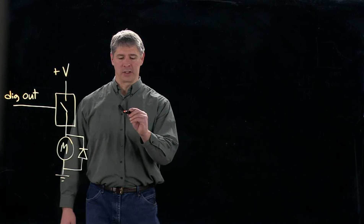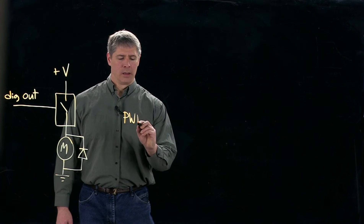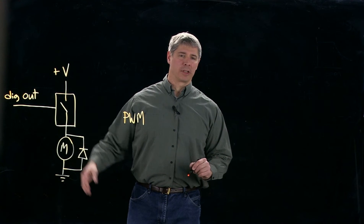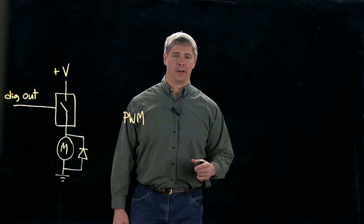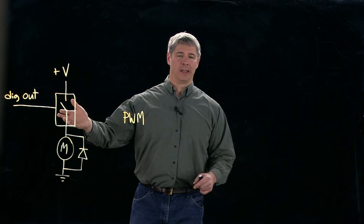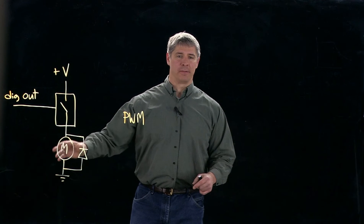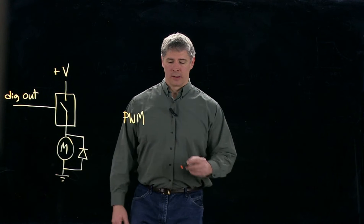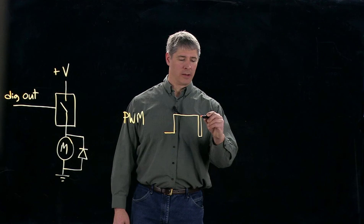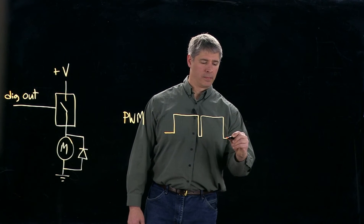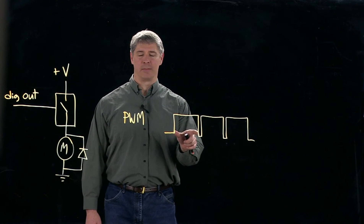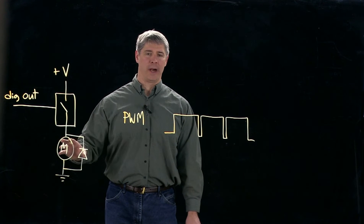The answer is that we use pulse width modulation. Even though we don't have any analog output from the microcontroller, we are able to control the duty cycle of a PWM signal and basically close and open the switch rapidly, therefore getting an average effect of the voltage across the motor. As an example, if we have a PWM output that looks like this, then the switch is closed most of the time, so we are getting something almost like full power to the motor.